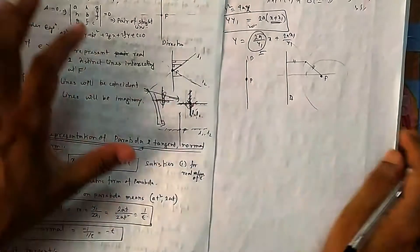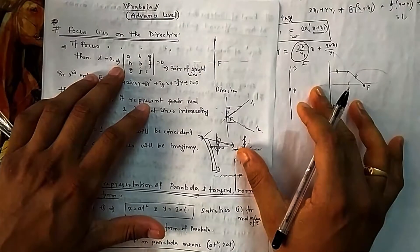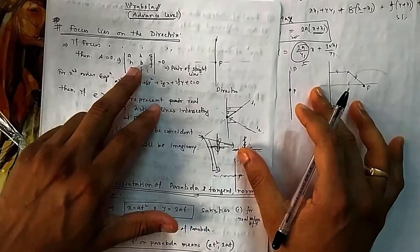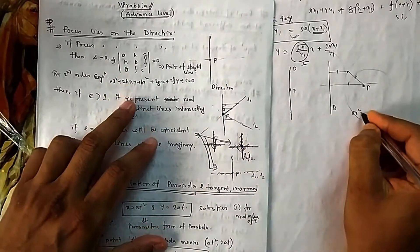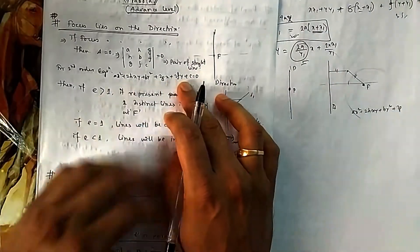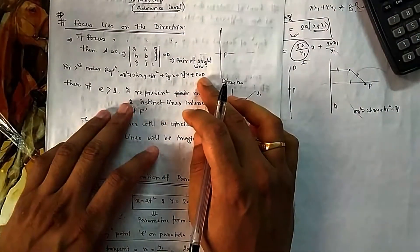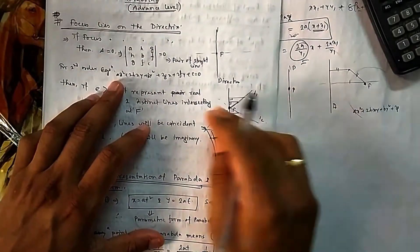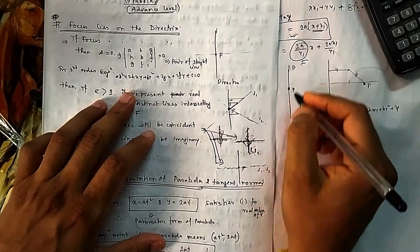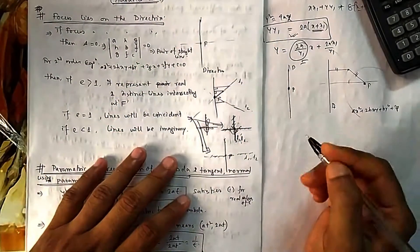If the focus lies on the directrix, it cannot be a curve. If you look at the second-degree general equation — ax² + 2hxy + by² + 2gx + 2fy + c = 0 — when the focus lies on the directrix, the discriminant delta becomes zero. That means the equation will represent a pair of straight lines.